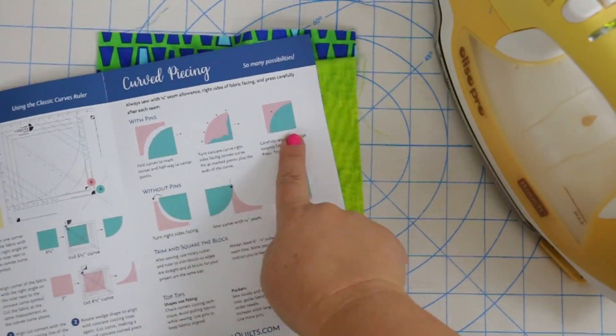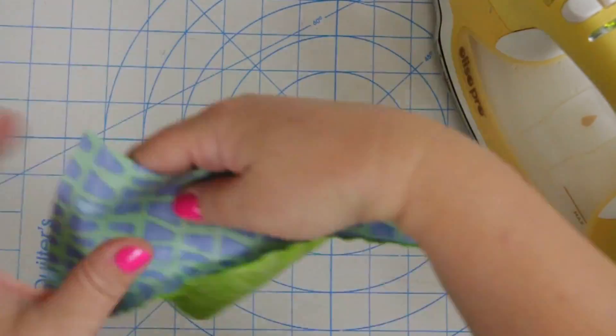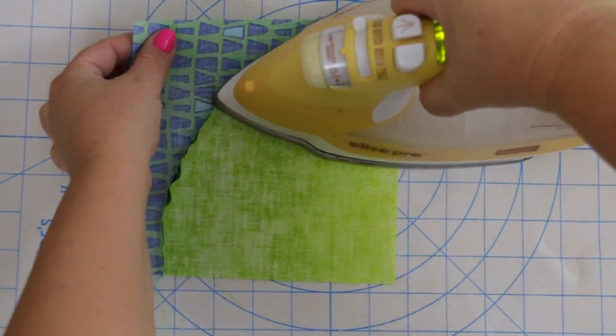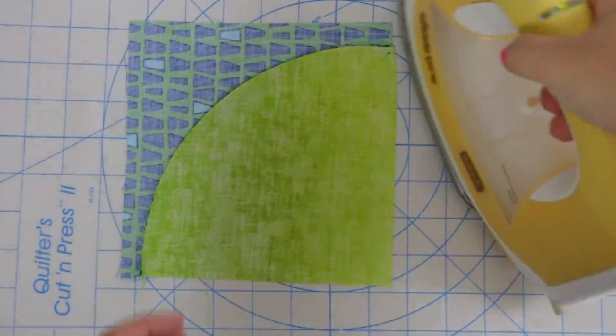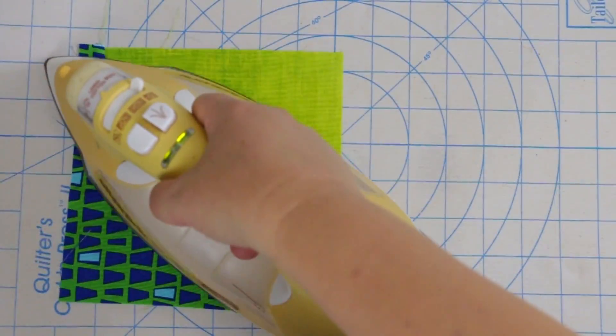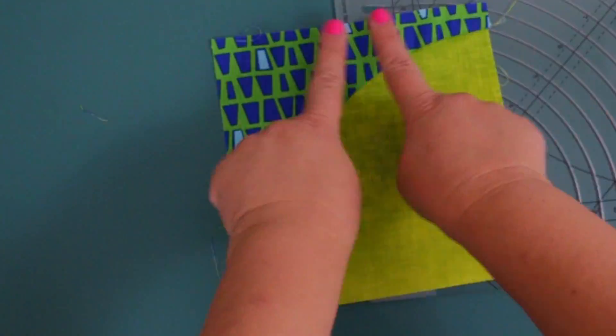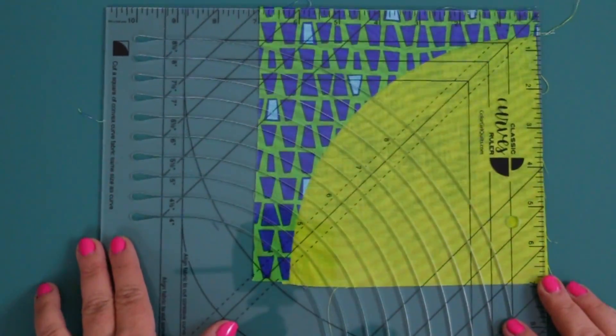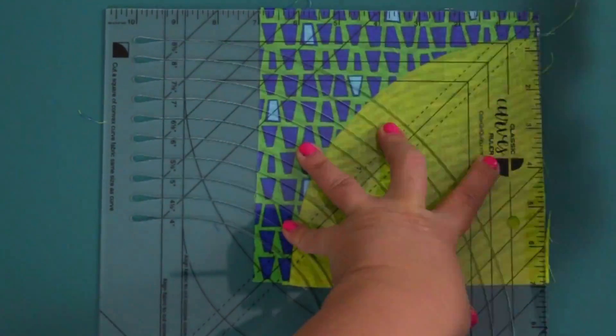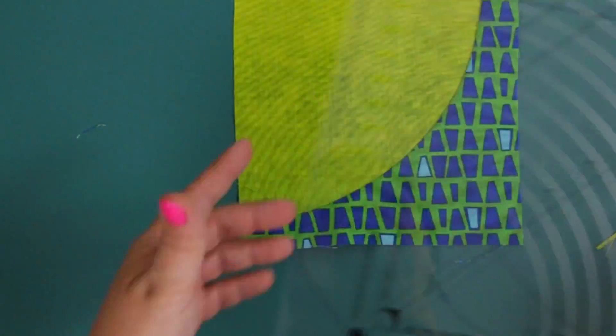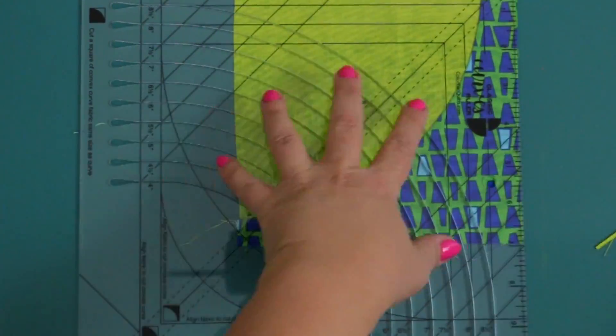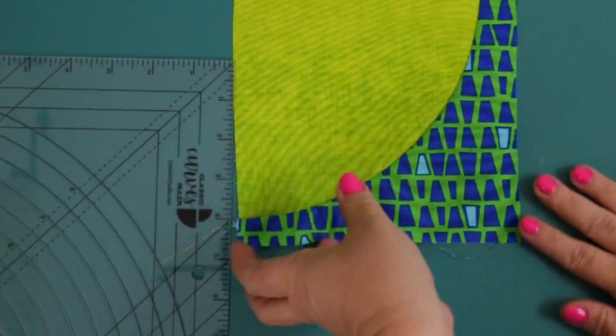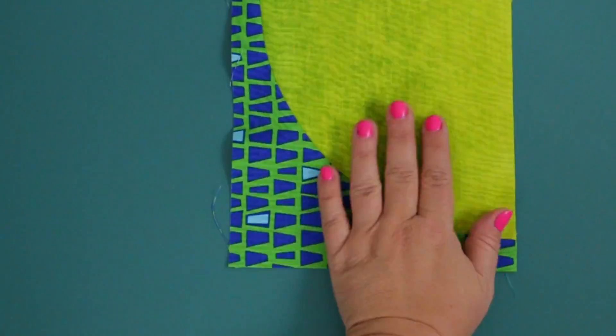I really like how, even in the instruction, Sharon shows us how to do the pressing. You're going to want to press the convex seam toward the concave and give it a press. And then we're going to want to square up our block. And in this case, I'm going to use the side that has the measurements to get it nice and squared and trim off the extra. And now I have a nice square block. Yay.